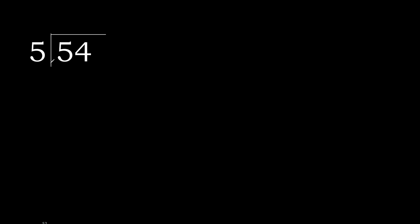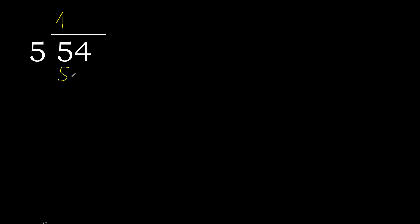54 divided by 5. 5 is not less, therefore work with 5. 5 multiplied by which number is nearest to 5 but not greater? 5 multiplied by 2 is 10 — 10 is greater. 5 multiplied by 1 is 5 — 5 is not greater. 5 minus 5 is 0. Next,